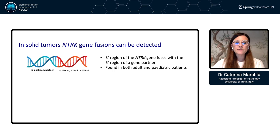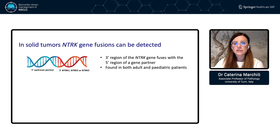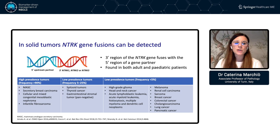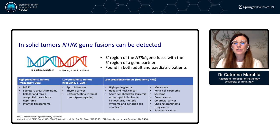We have come to understand that ENTRAC gene fusions can be detected in solid tumors. Tumoral lesions can harbor genetic alterations involving these three genes — these are fusion genes, meaning the three-prime region of the ENTRAC gene is opposed to the five-prime region of a gene partner. This fusion can be found in both adult and pediatric tumor lesions, and there is a peculiarity related to frequency: there are categories of solid tumors in which specific ENTRAC gene fusions are very highly prevalent, such as secretory breast cancer or secretory carcinoma of the salivary gland, where a specific ENTRAC 3 gene fusion is pathognomonic.